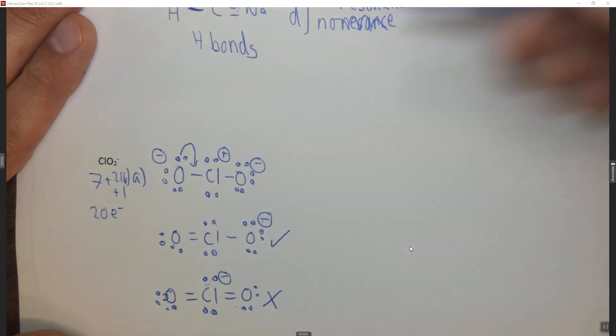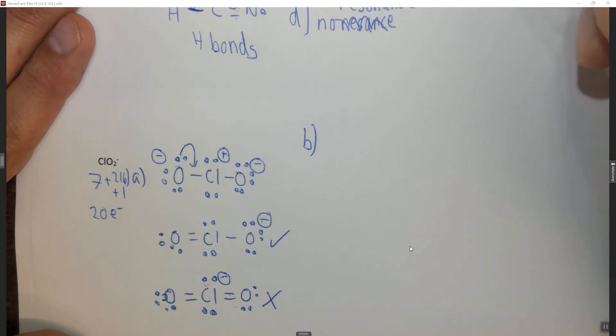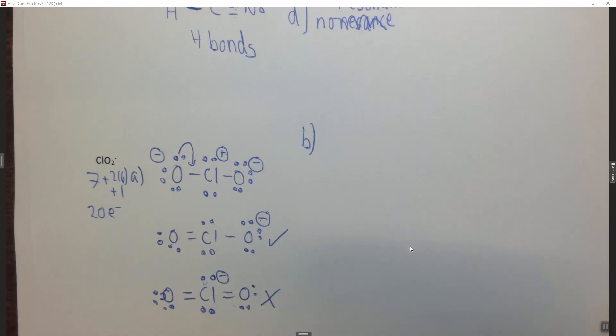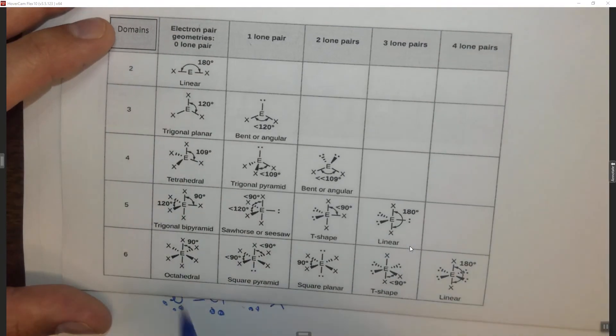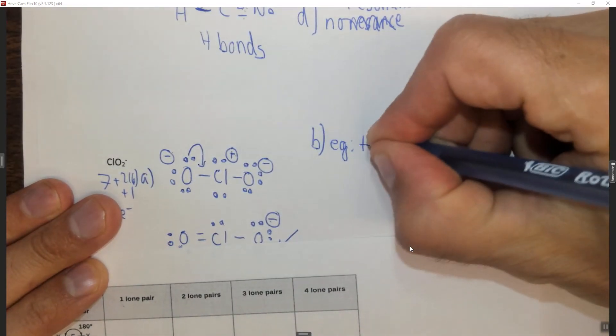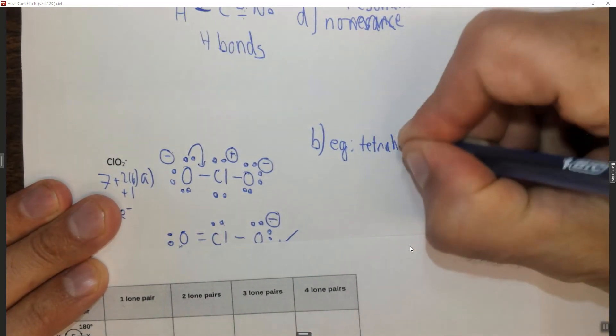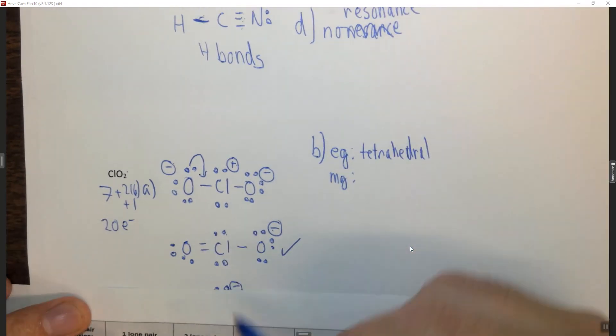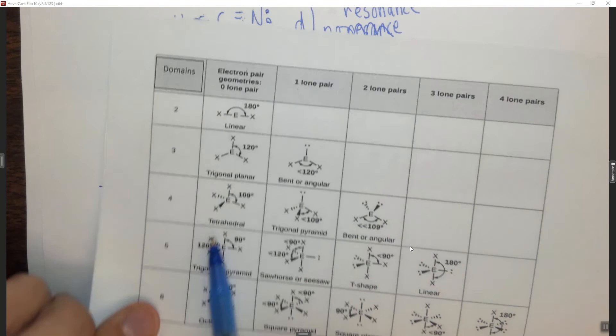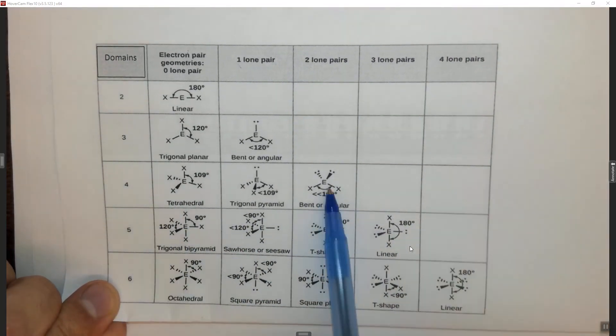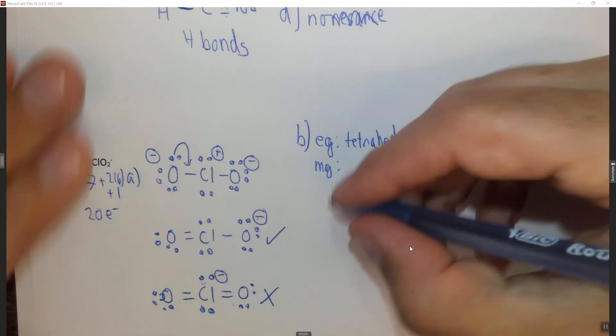Alright, now we can look at B, the electron and the molecular geometry. So in this case with chlorine, we have one, two, three, four domains. So if we use our little cheat sheet, four domains is electron geometry of tetrahedral. The molecular geometry, because two of those four domains are lone pairs, is zero, one, two lone pairs, which is bent.